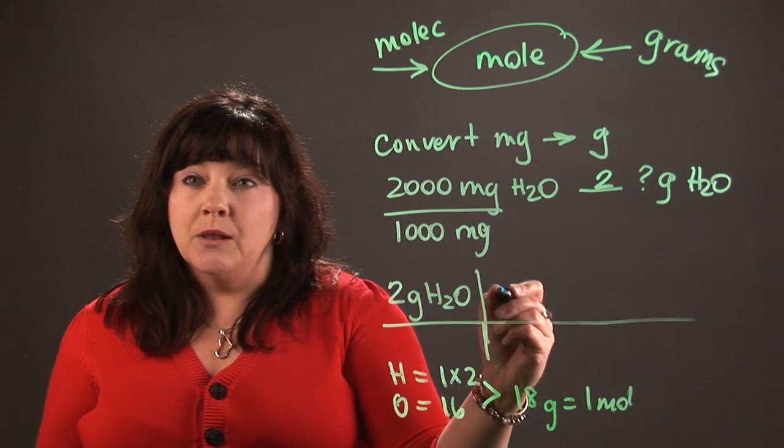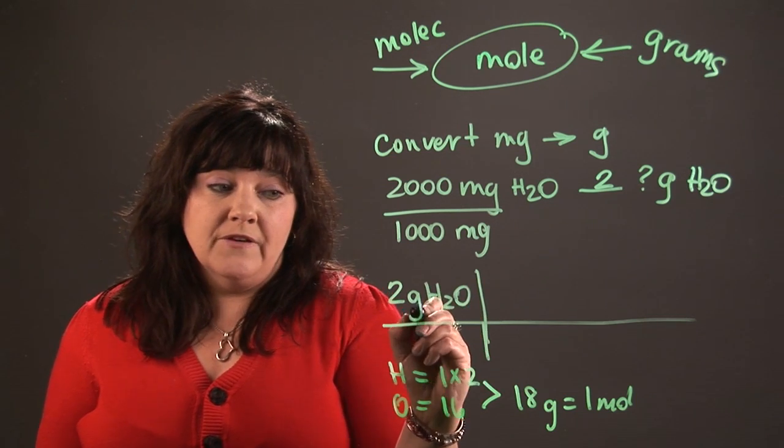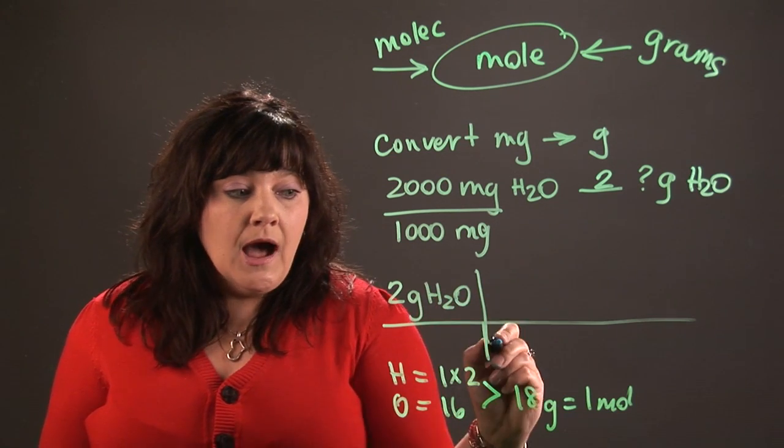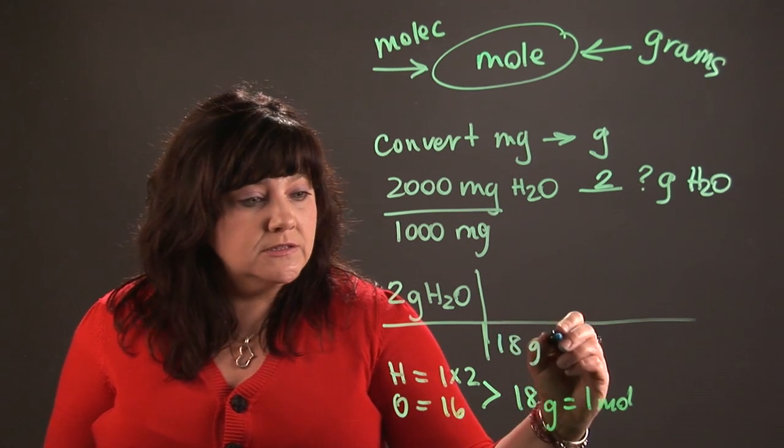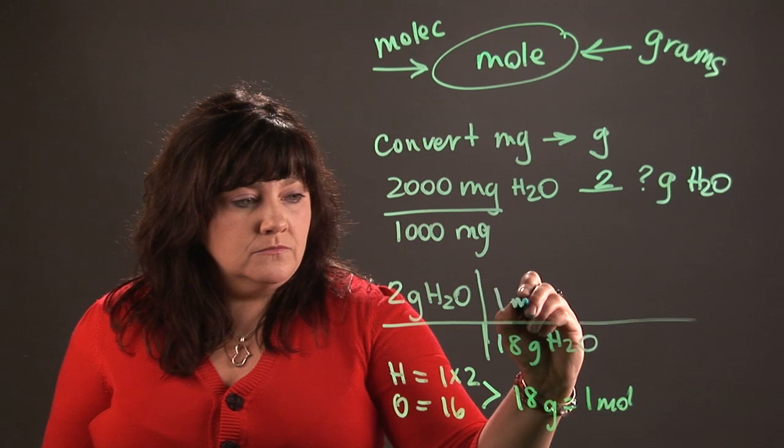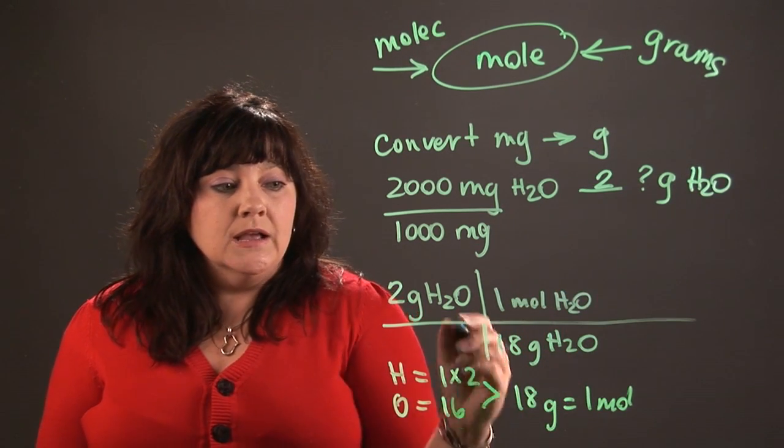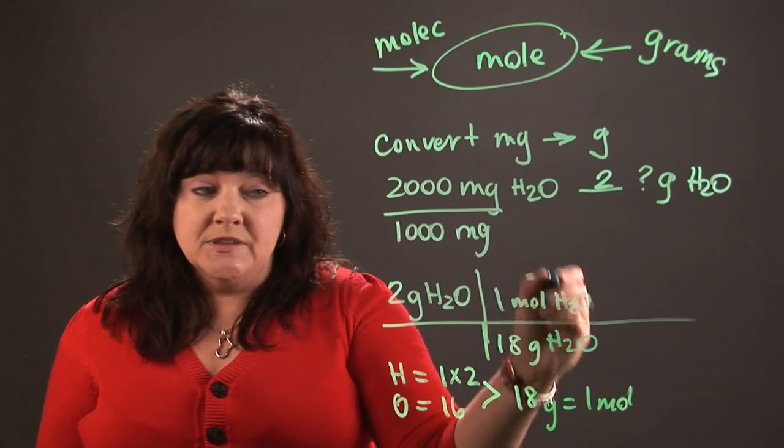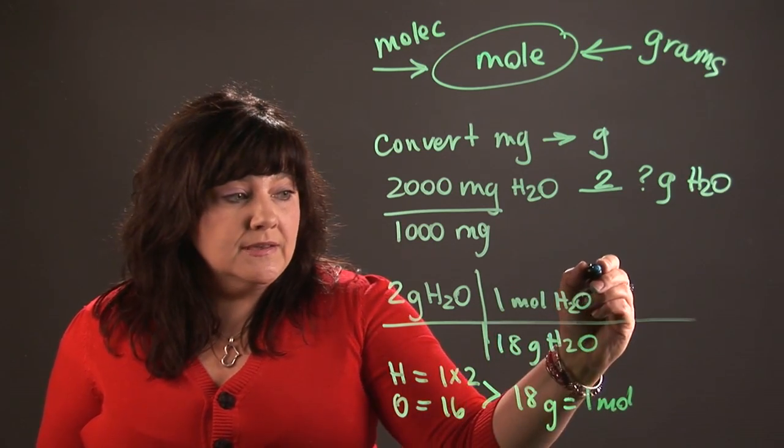So 18 grams is one mole. All right, I'm going to take this information and put it back up here. But in my conversion problem it's very important that if I have grams of water up here, I put grams of water down in the bottom so that I can do something called cancelling out my units. All right, so I have two grams and I've set up this conversion of the number of moles to the number of grams of water based on water's atomic mass.